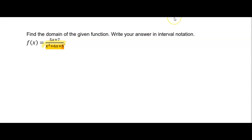So, looking at the x squared plus 6x plus 5, we want to find out when this is equal to zero, because these solutions are where the function is undefined.